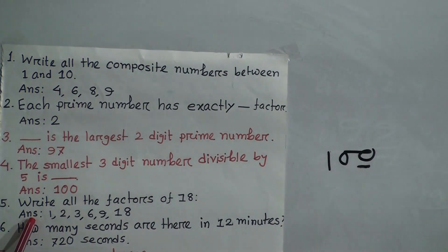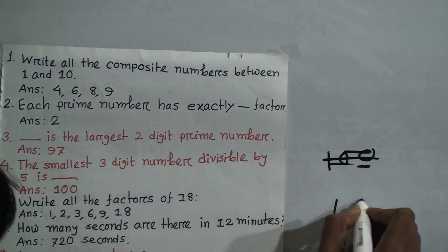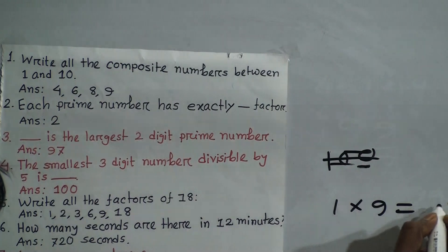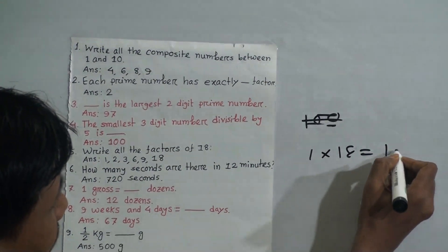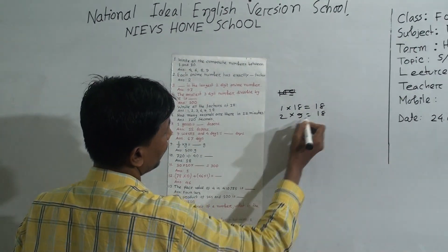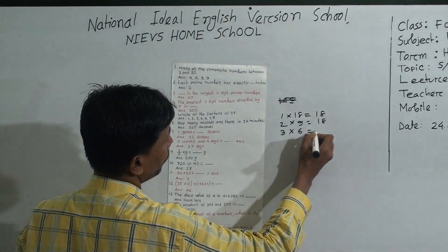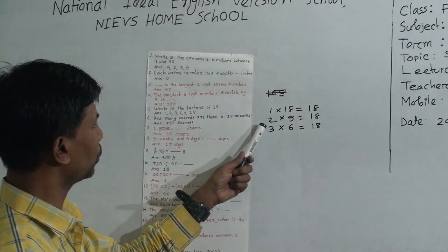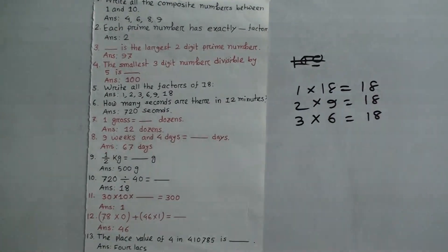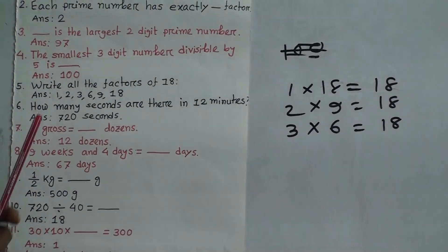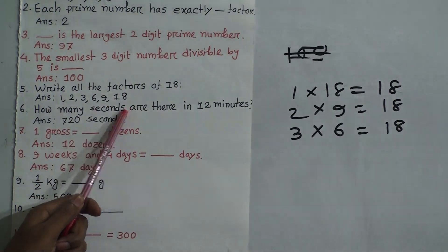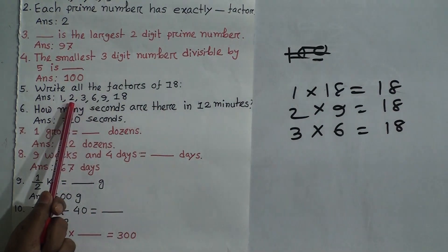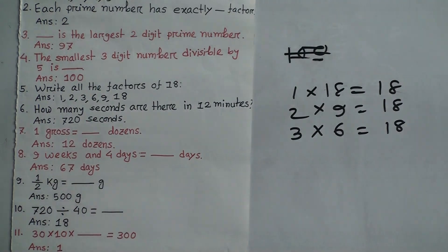Question 5: Write all the factors of 18. We have 1 × 18 = 18, 2 × 9 = 18, and 3 × 6 = 18. So the factors of 18 are 1, 2, 3, 6, 9, and 18.